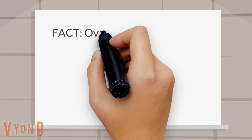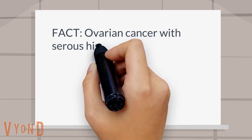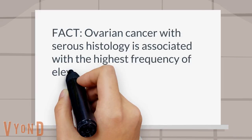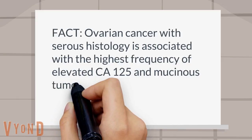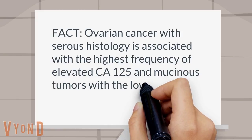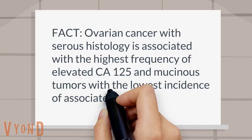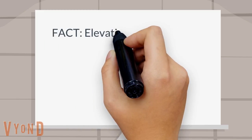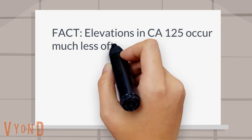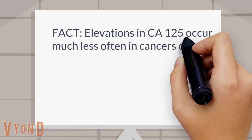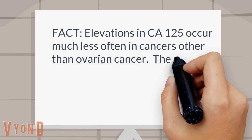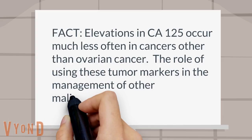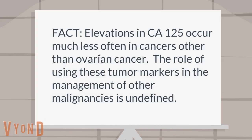Fact: ovarian cancer with serous histology is associated with the highest frequency of elevated CA125 and mucinous tumors with the lowest incidence of associated elevated CA125. Fact: elevations in CA125 occur much less often in cancers other than ovarian cancer. The role of using these tumor markers in the management of other malignancies is undefined.